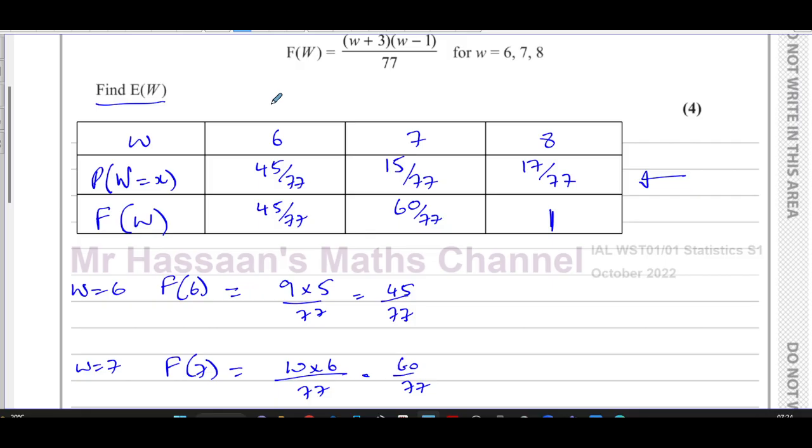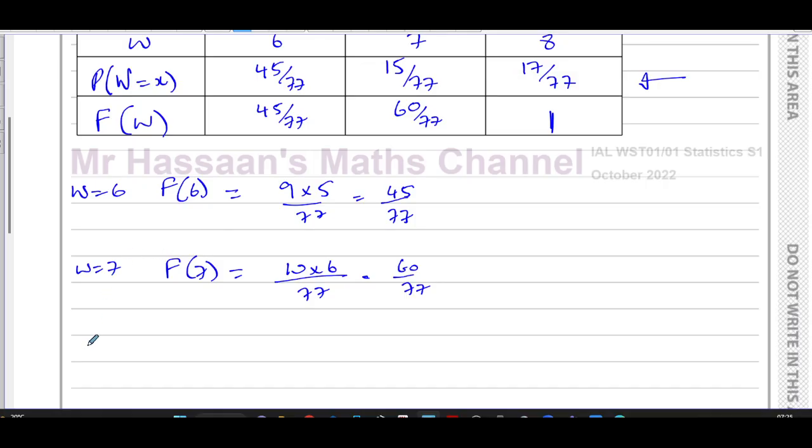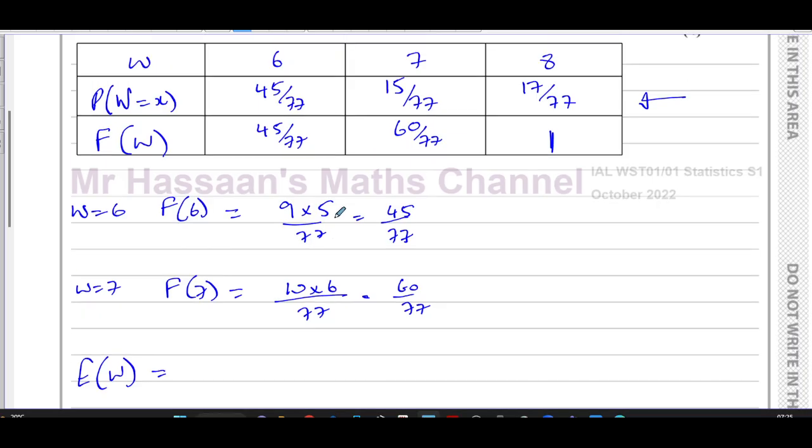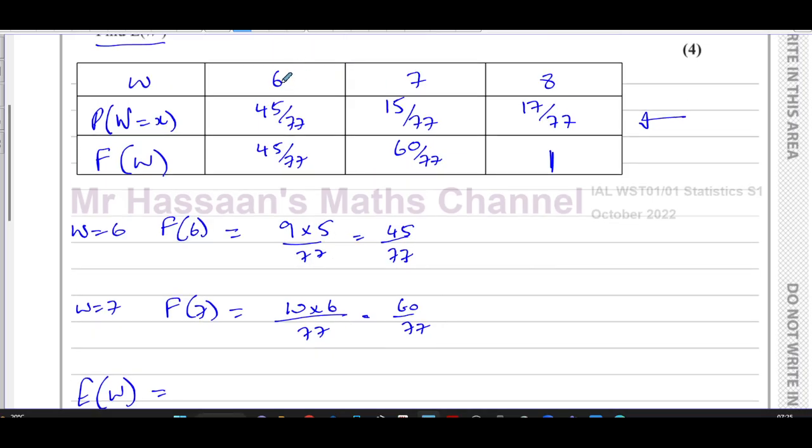Because what is E(W)? E(W) is basically the expected value of W, which is like the mean of W. All right, so E(W) is found very simply by just multiplying the category by its possibility. So W times the probability of W for each of these, and then add it together.